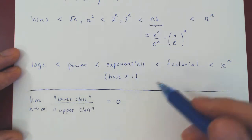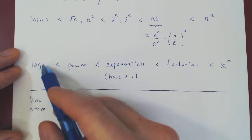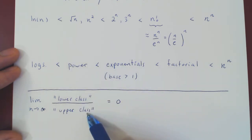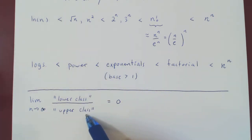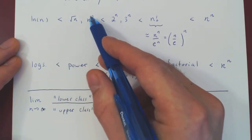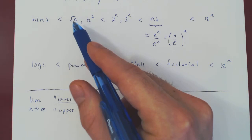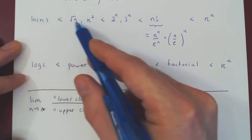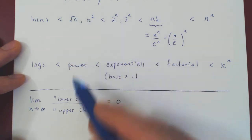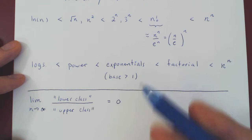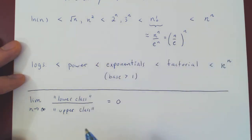For example, if you had a logarithmic function over a power function, you would have an infinity over infinity case. If you use L'Hôpital's rule, you will find very quickly that no matter what the power is — whether it's 2, one half, one third, or one over ten — any logarithmic function over a positive power of n will have a limit of zero. I will leave this as an exercise.